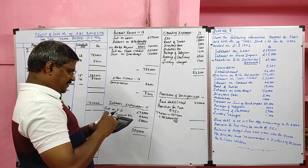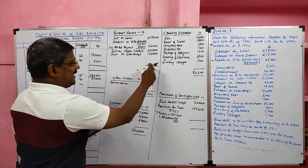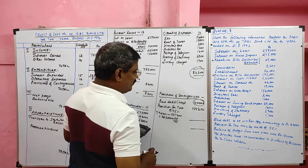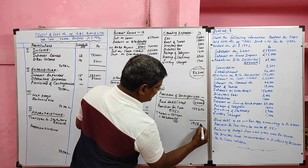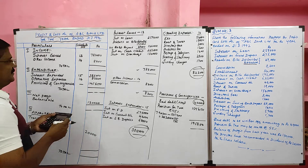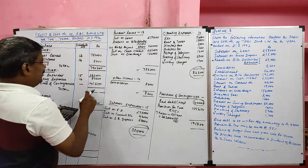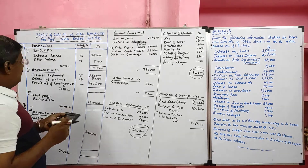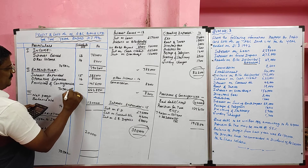On the net profit of rupees 2,83,000, we calculate provision for income tax at 55 percent, which gives rupees 1,55,650. Total provisions and contingency equals bad debts 40,000 plus provision for tax 1,55,650 equals rupees 1,95,650. This is recorded against provisions and contingency in the profit and loss account. Total income is 7,90,200; total expenditure is 3,85,000 plus 82,200 plus 1,95,650 equals rupees 6,62,850. Current year net profit equals 7,90,200 minus 6,62,850 equals rupees 1,27,350.